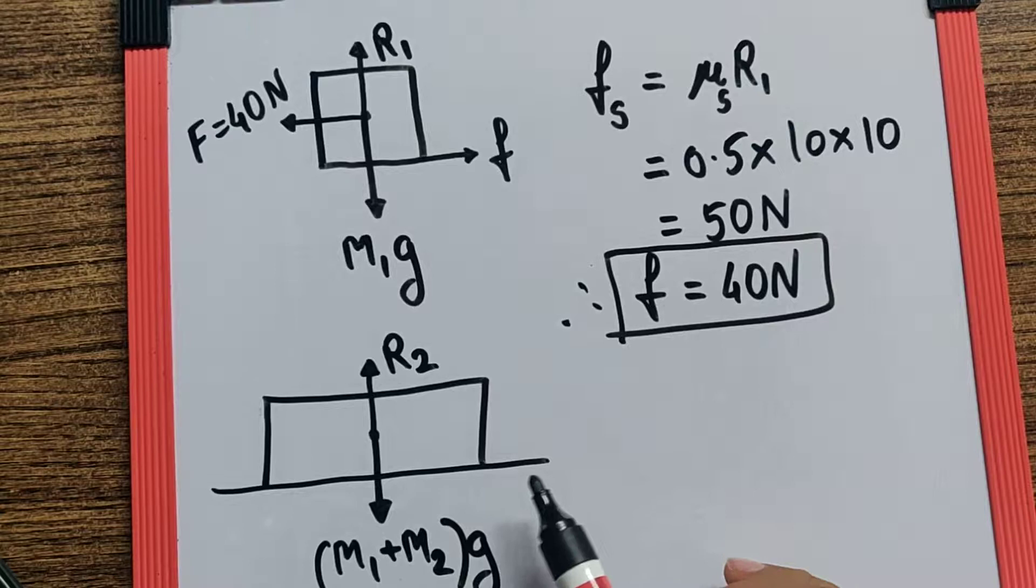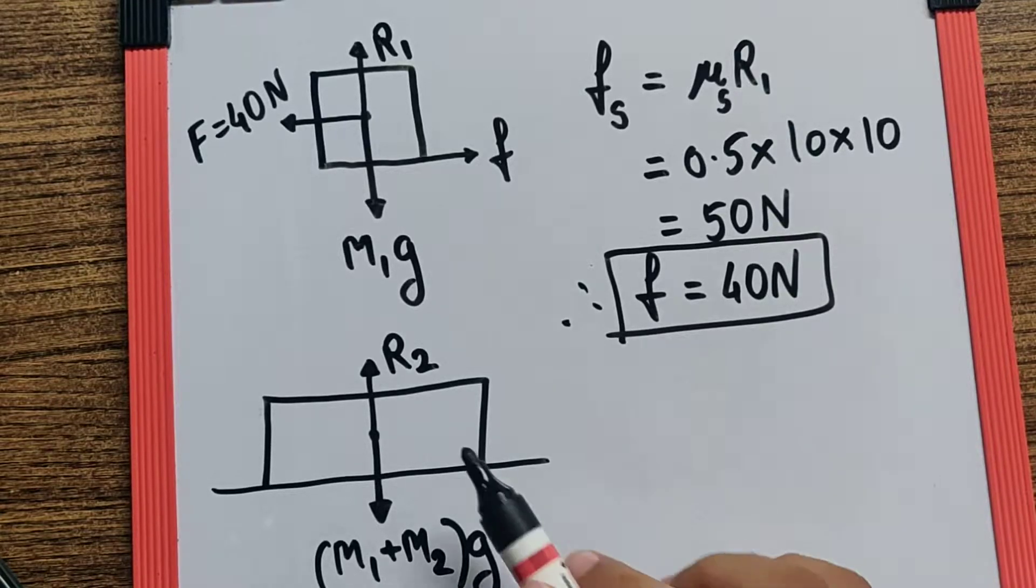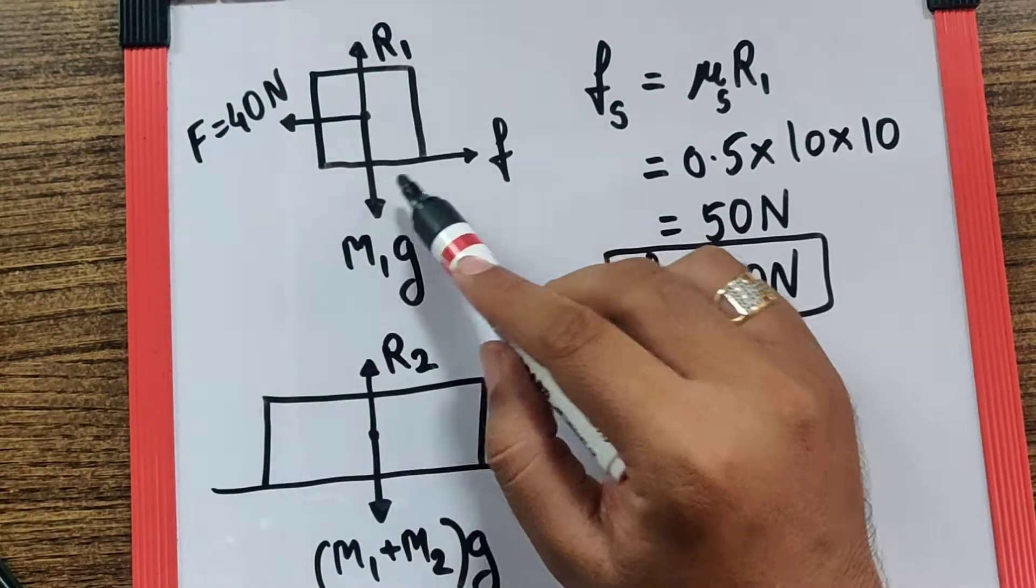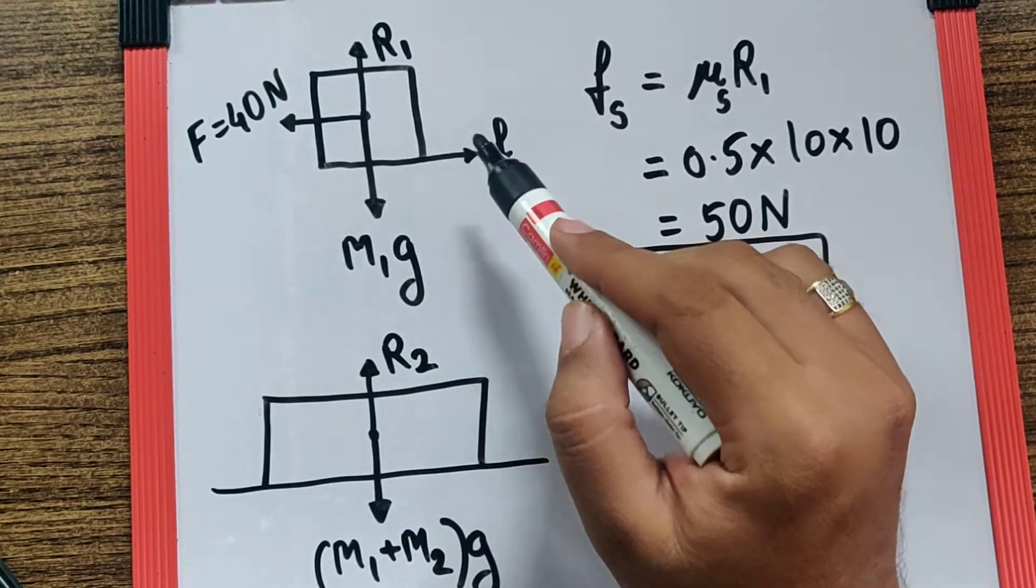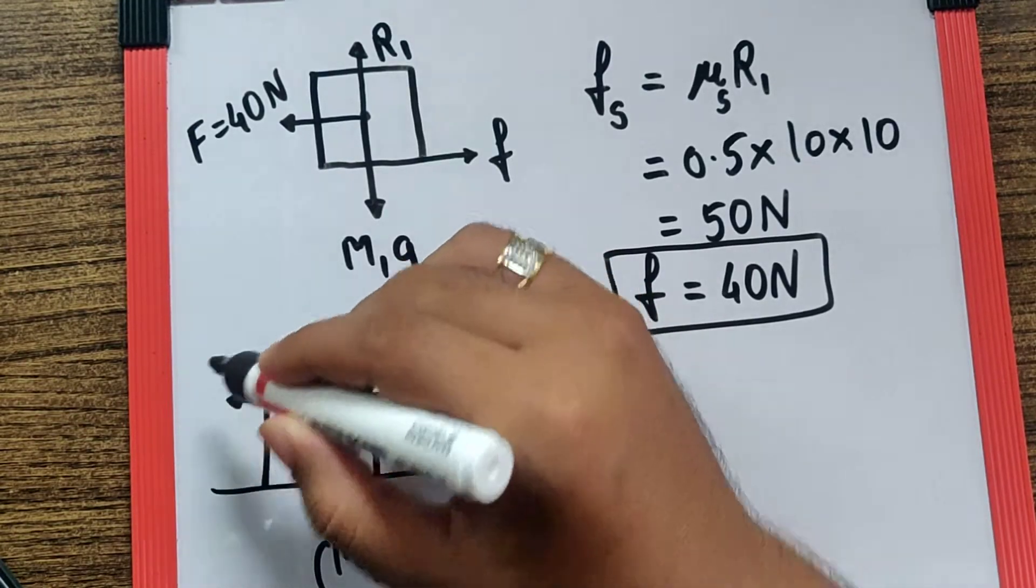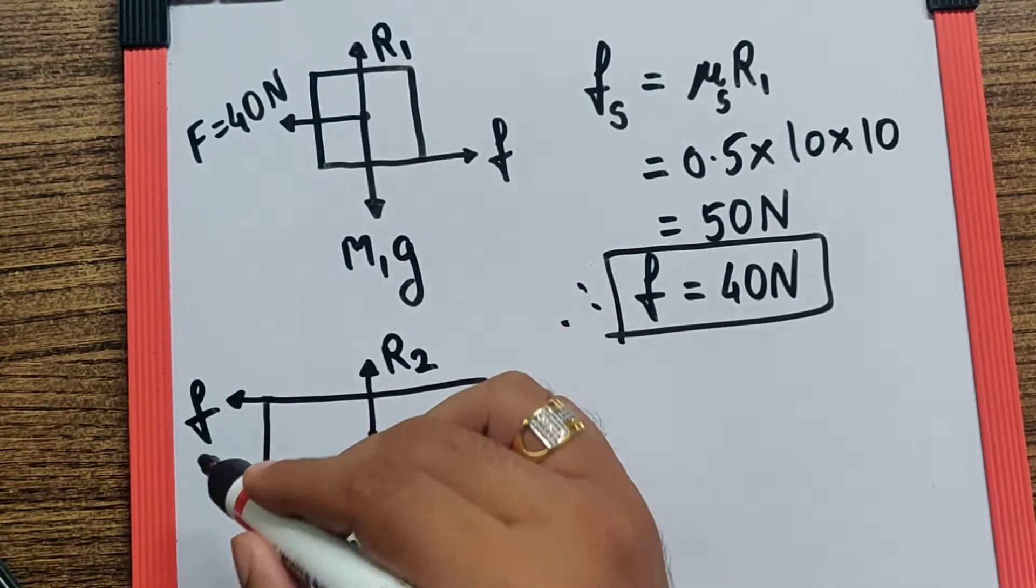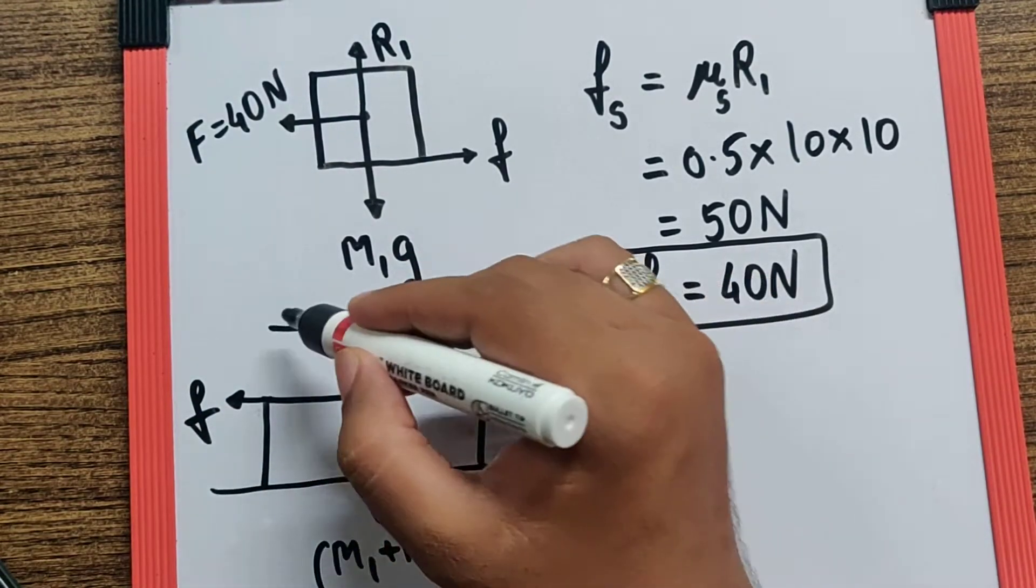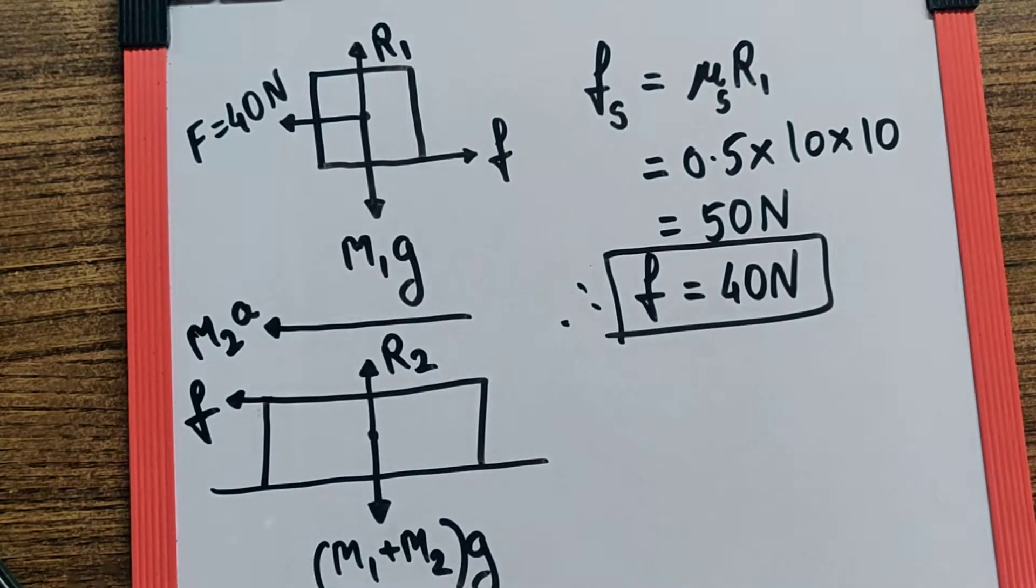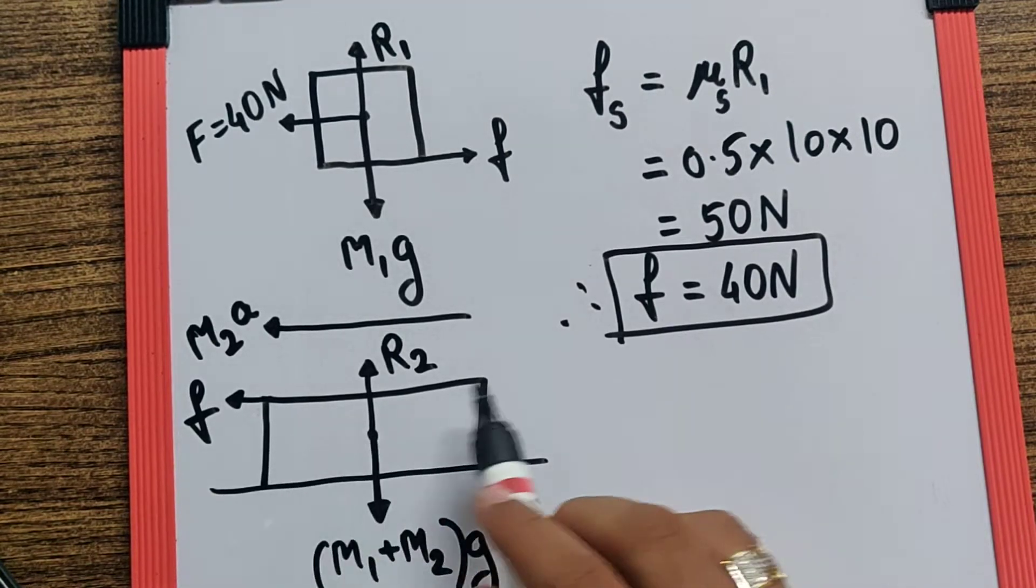there will be no friction acting on the bottom of the slab. But the block is experiencing a friction backward, which will give as a reaction friction to the slab in the forward direction, and that will cause the slab to move with some acceleration. So here I can say the reason for this slab to move is the friction.